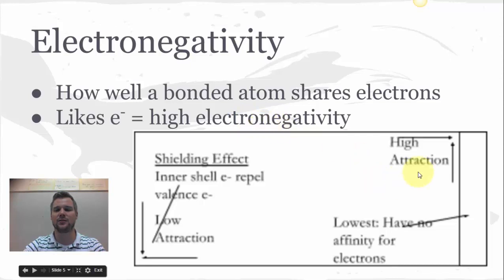If you like electrons, your EN value, your electronegativity value, is going to be high. Atoms that like electrons are going to be nonmetals. That's why they receive electrons when we do ionic bonding. Fluorine is going to have a high electronegativity. This is the highest electronegativity: fluorine. The lowest electronegativity is going to be francium. They really don't like electrons.